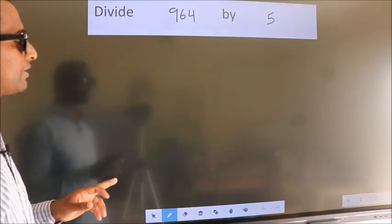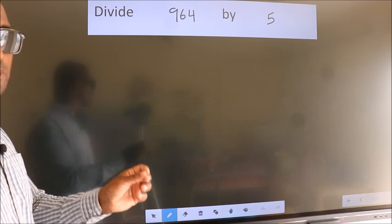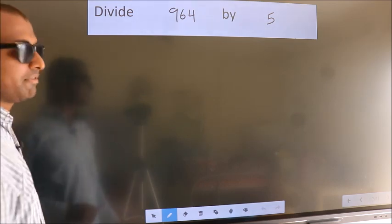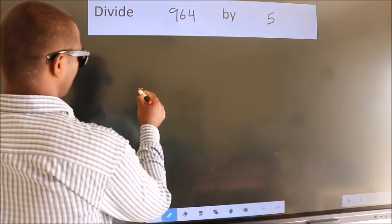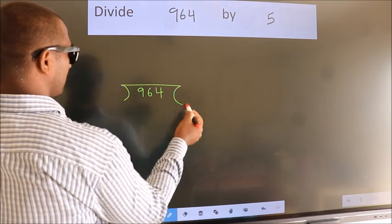Divide 964 by 5. To do this division, we should frame it in this way. 964 here, 5 here.